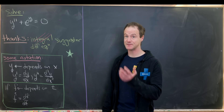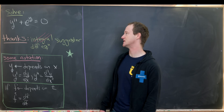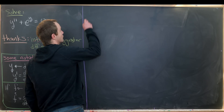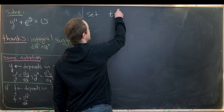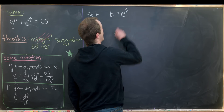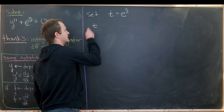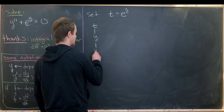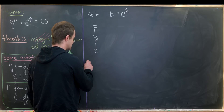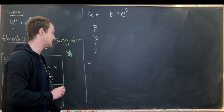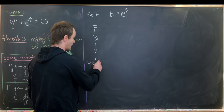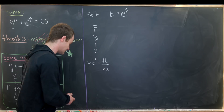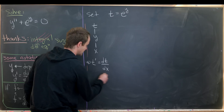The first thing I'll do is make a substitution. The obvious substitution is to let some variable equal e to the y, and that variable will be t. So let's set t equal to e to the y. We have t depending on y depending on x, so it makes sense to take the derivative of t with respect to x — t prime, which is dt by dx.